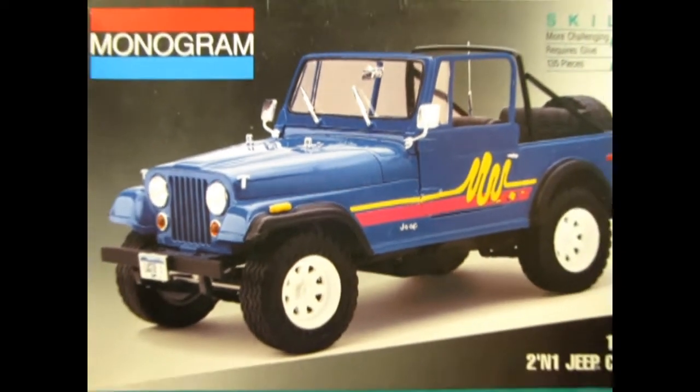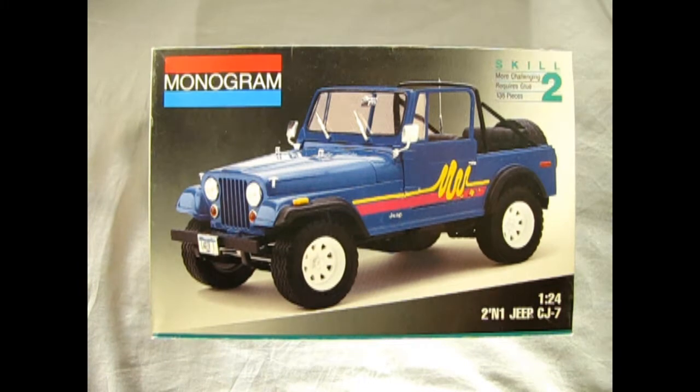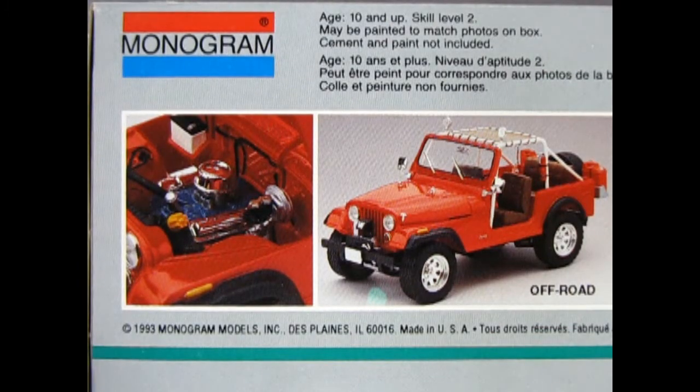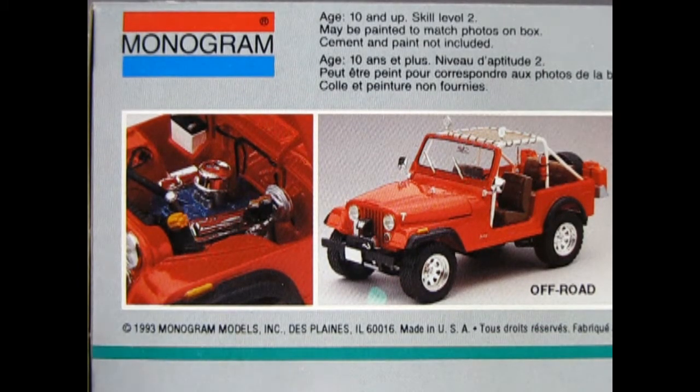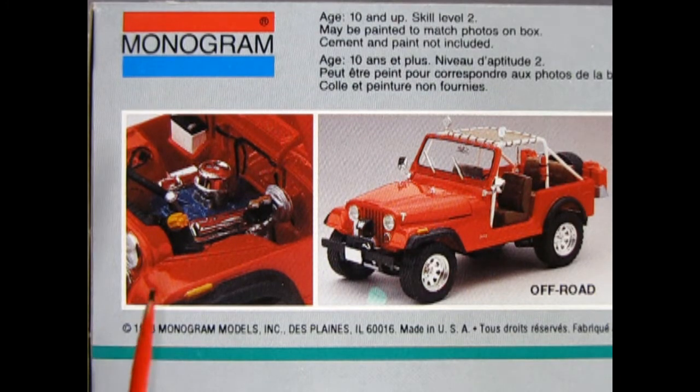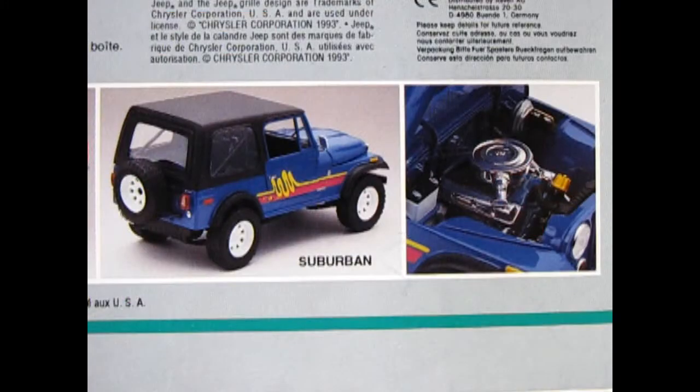And now we wind our clocks all the way back to 1977 as we check out the Monogram 2-in-1 Jeep CJ7. This edition of the Jeep came out in 1993 by Monogram Models and includes a version for building the Off-Road or the Suburban.